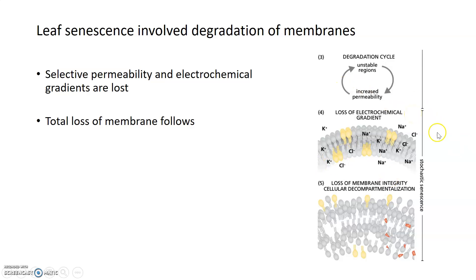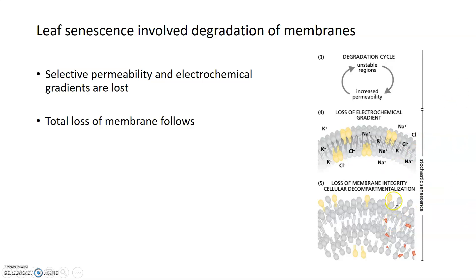This loss of electrochemical gradients as well as decompartmentalization are part of stochastic senescence — that random, unregulated senescence. Whereas everything before that, including the degradation by proteases and lipases of the membrane, is part of programmed senescence, the regulated part. That distinction happens here because once electrochemical gradients are lost, there's no way to control or measure the true rate at which senescence will occur — it might happen faster or slower depending on how quickly membrane permeability is lost, making it a more stochastic process.